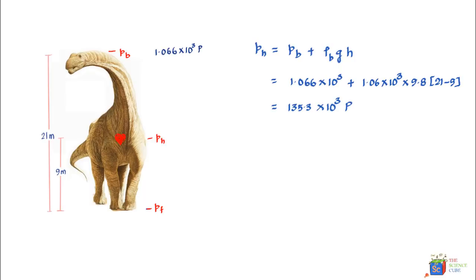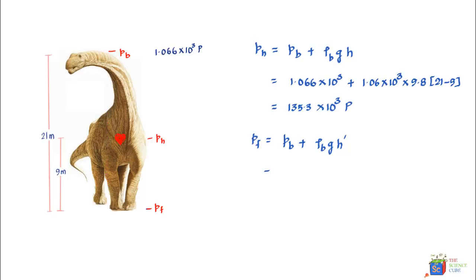The second question asks: if the heart produces this pressure, what is the pressure at the feet of the Argentinosaurus? The equation we'll use is that the pressure at the foot equals the pressure at the brain level plus the pressure due to the blood column between the brain and the foot, written as density of blood times g times the distance h′.